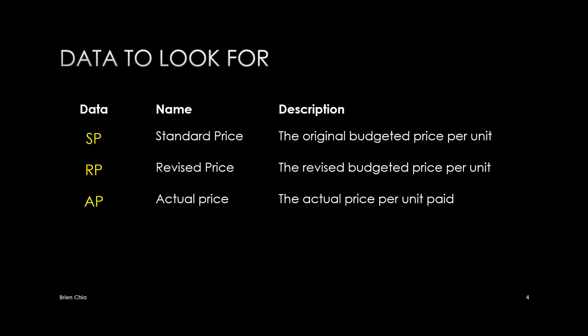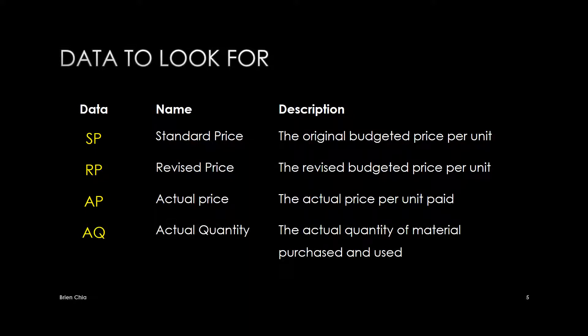We'll also be looking for the actual price — this is the money you actually pay for the material. And finally, you will have actual quantity, which is the actual quantity of material purchased and used. You may see a few types of quantity like standard quantity and revised standard quantity — ignore all that. Just look for actual quantity.